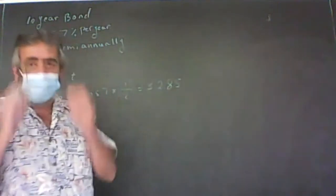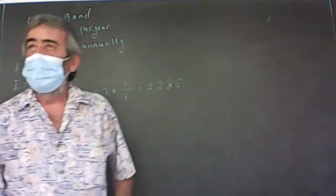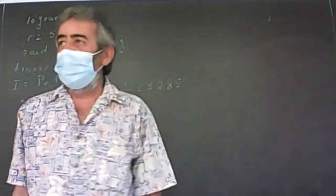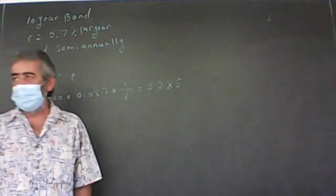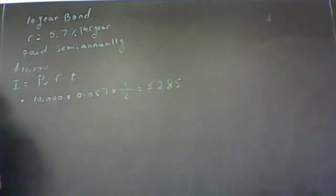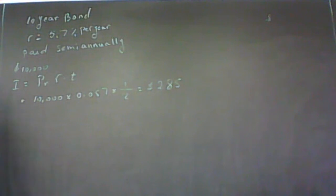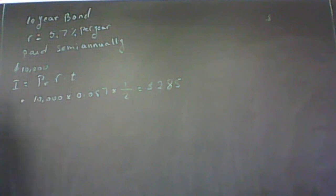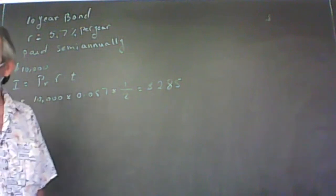So for a six-month period, the amount of interest is $285. Every six months, Bank of America pays San Diego $285 for the $10,000 bond that he has.